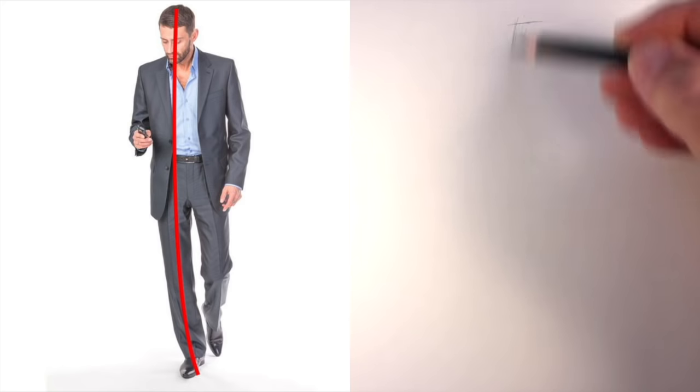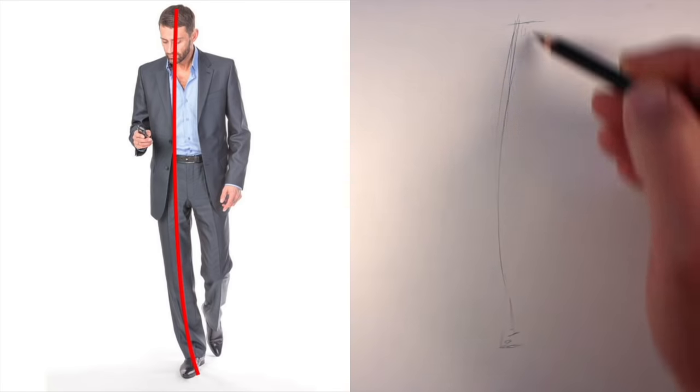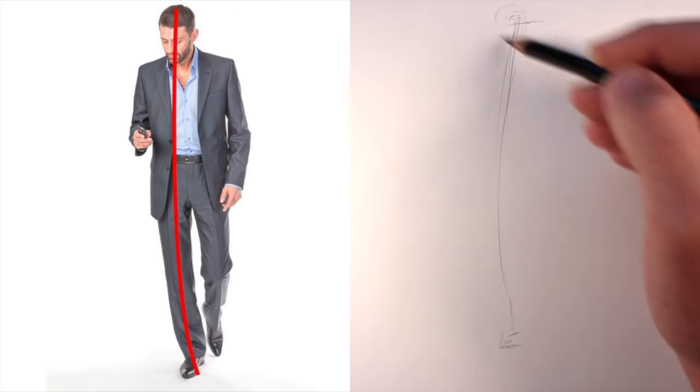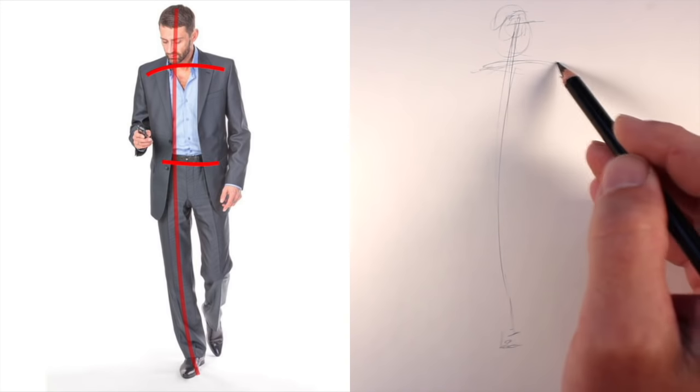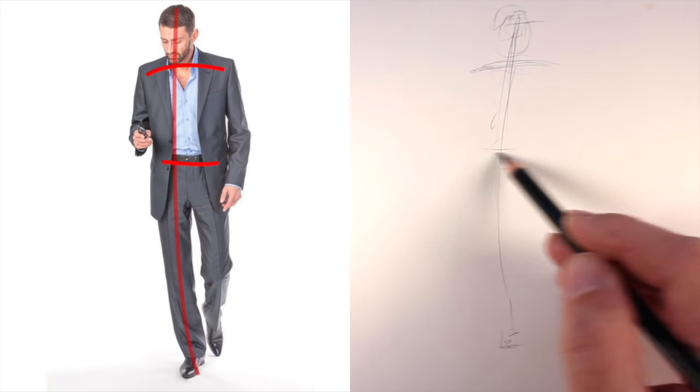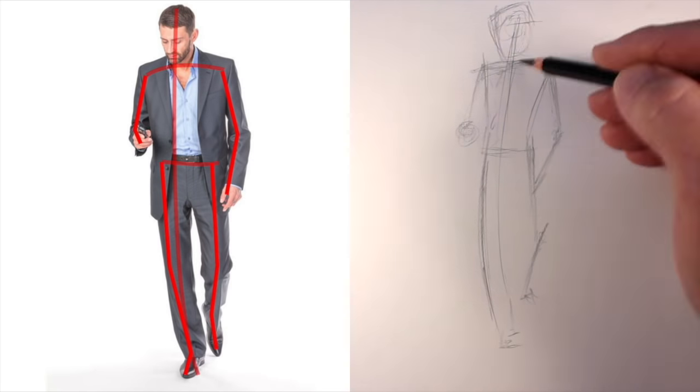Here again, I'll start with a line from the top of the head to the bottom of the feet. This will help to ensure that I get the entire figure on the picture plane. Next, I'll look at the locations of the shoulders and the waist, and I'll draw lines to indicate both the shoulders and the waist. Keep in mind that these lines may curve.